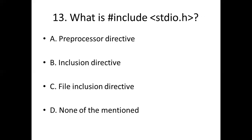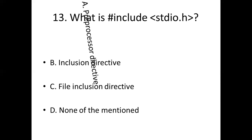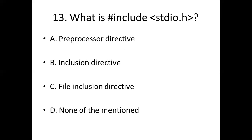Thirteenth bit. What is #include stdio.h? Option A: preprocessor directive. Option B: inclusion directive. Option C: file inclusion directive. Option D: none of the mentioned. Answer: Option A, preprocessor directive.